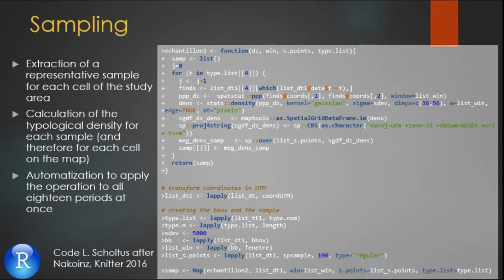These different operations are stored in R within a function in order to be able to perform them all at once over all 18 periods, creating 18 times about 100 samples corresponding to the cells created for the study area.